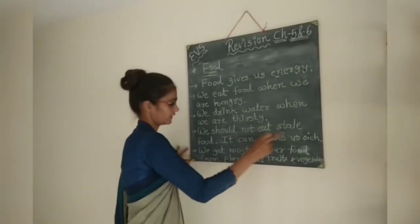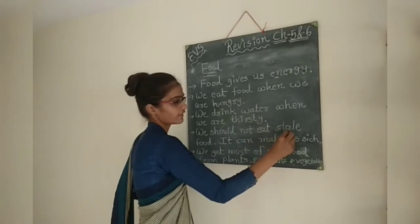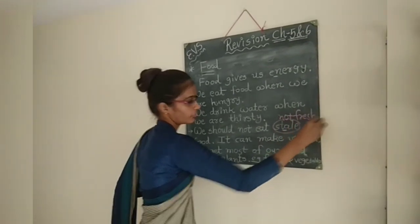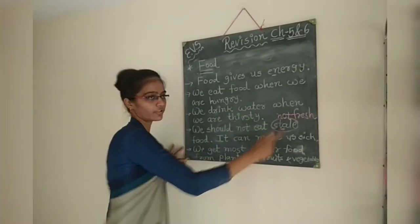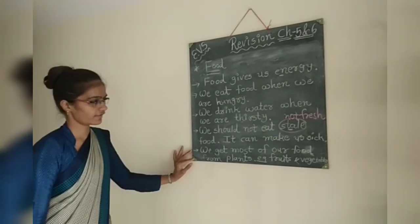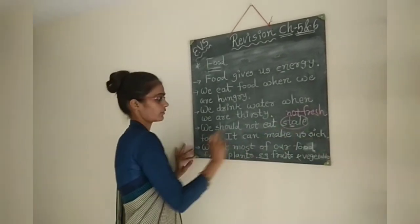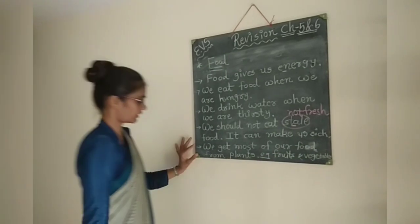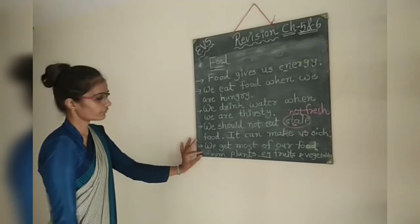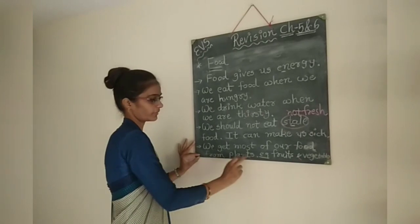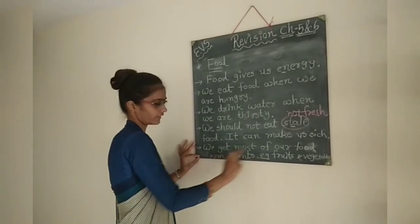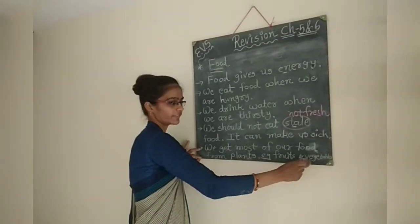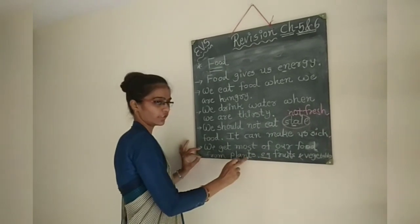Number 4: We should not eat stale food. Stale means not fresh. We should avoid stale food because stale food can make us sick. Number 5: We get most of our food from plants. For example, fruits and vegetables that we get from plants.